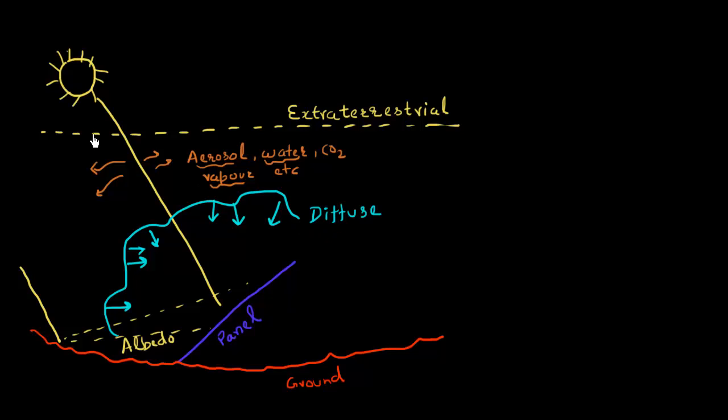And that is called as a diffusive component of light. And I'm mounting my panel on the ground over here. This ground itself might have a finite reflectivity and it can reflect this light which is incident on it on other parts of this ground.